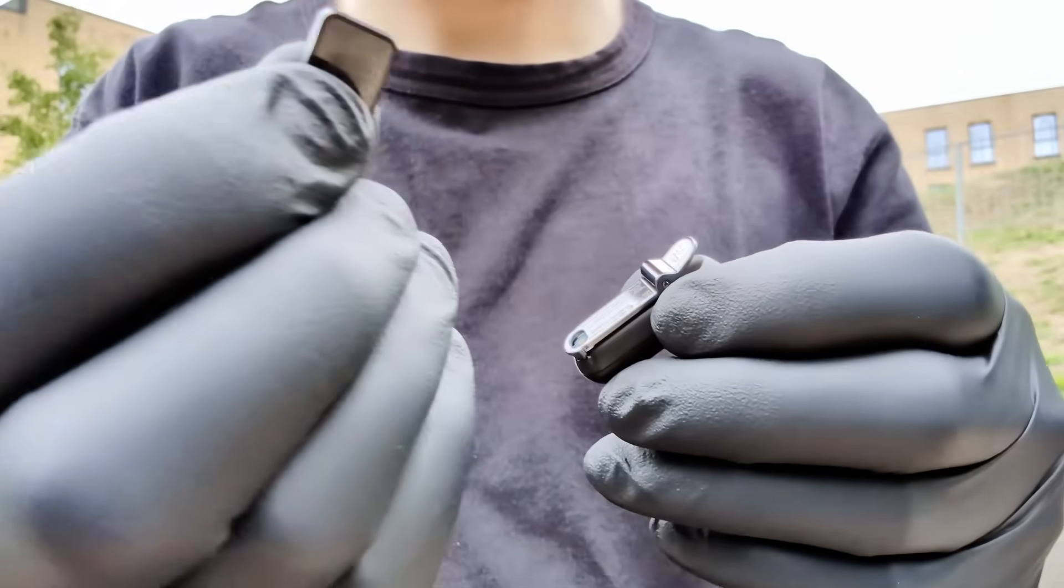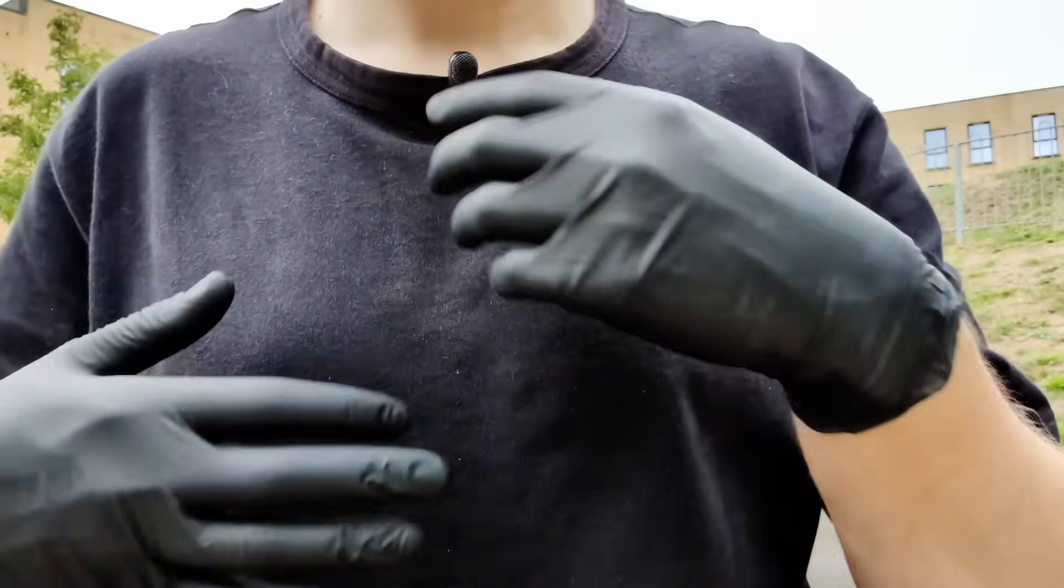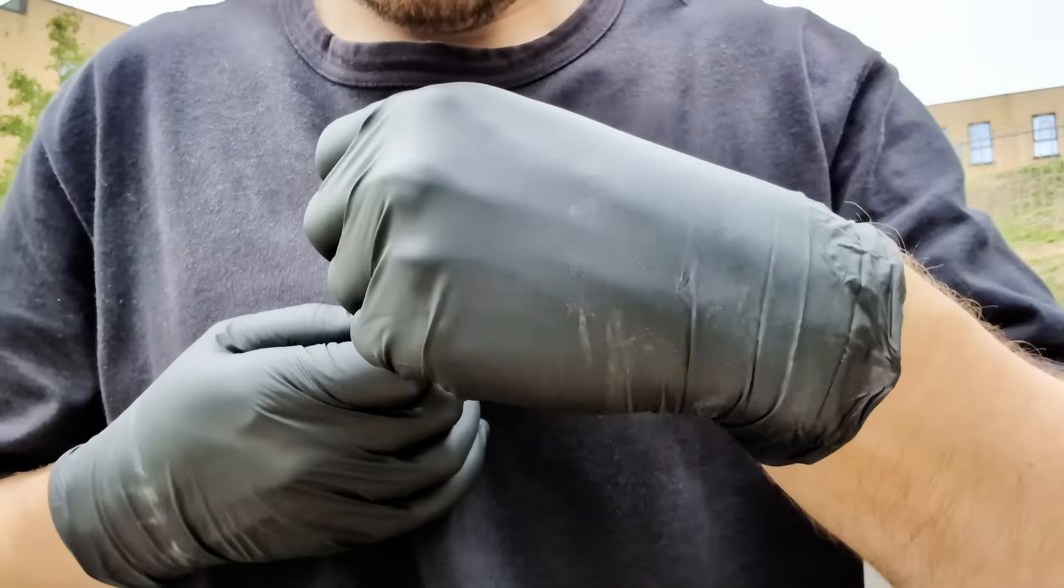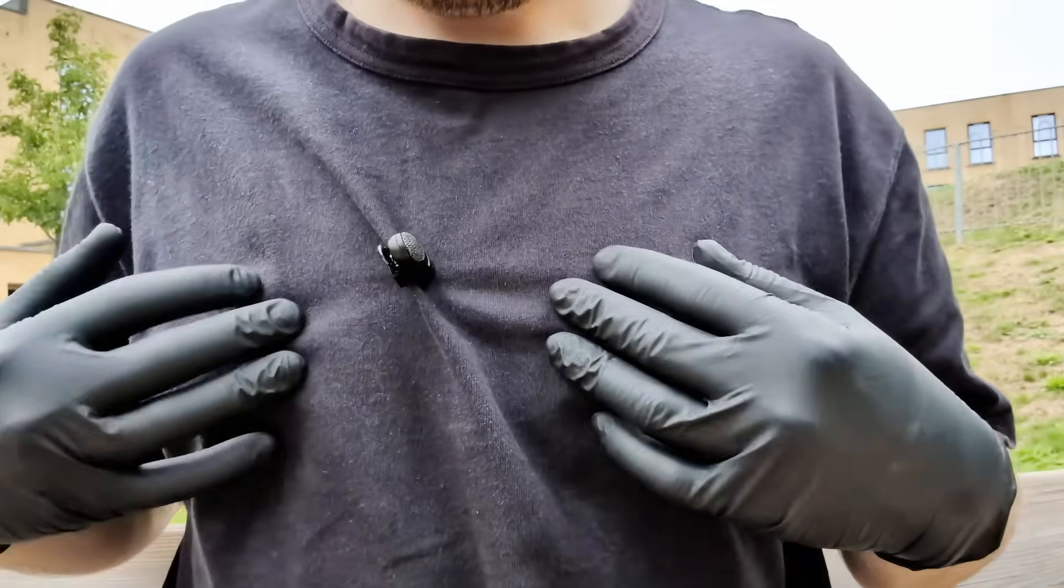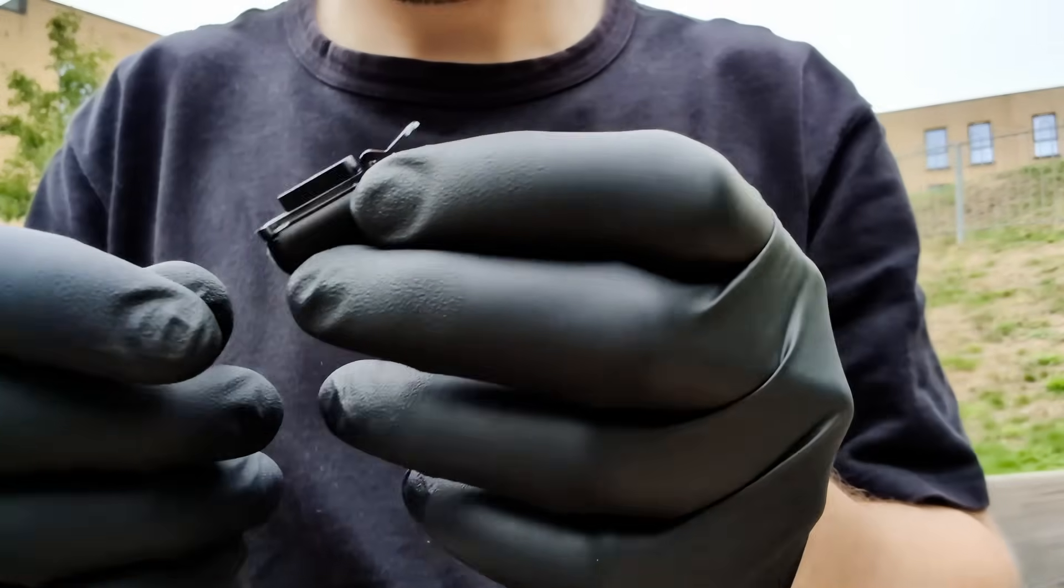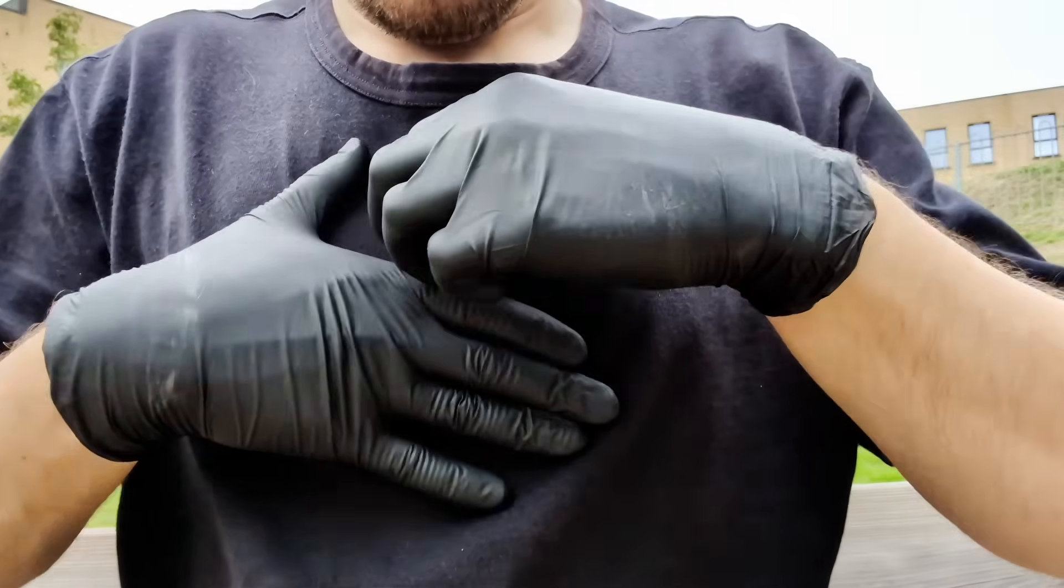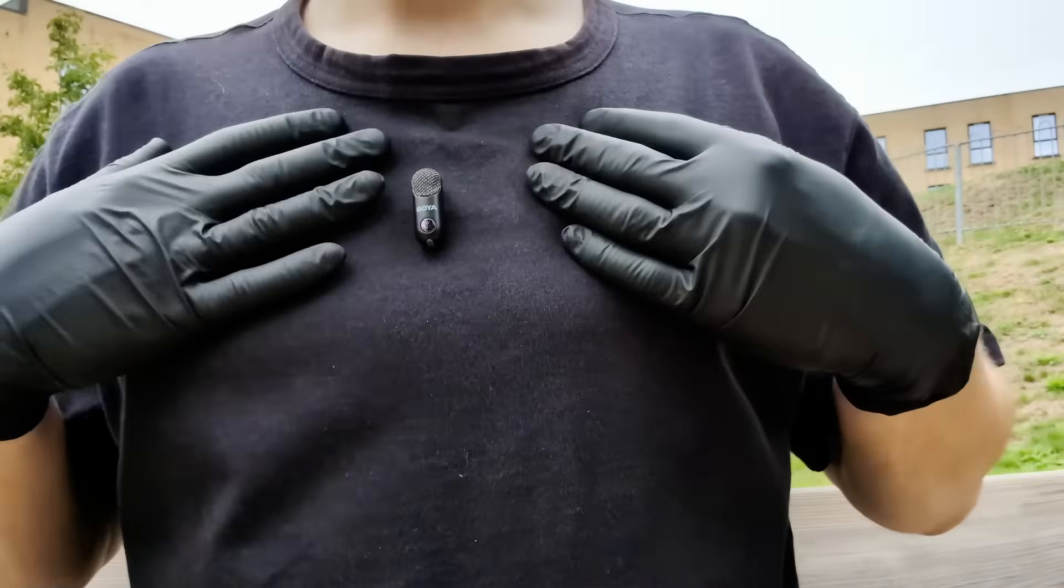We connect the tiny receiver to the phone and attach the transmitter to our clothing. And here's an ingenious detail. Besides the standard clip, the kit includes a magnetic holder. Look at what a difference this makes. No more stretched-out collars or fabric folds.